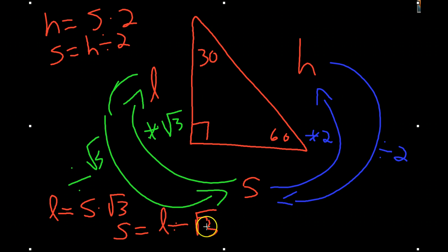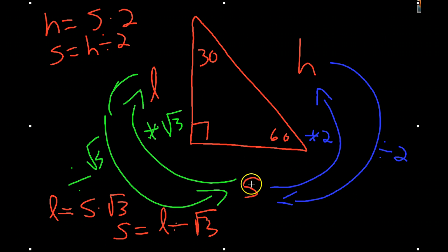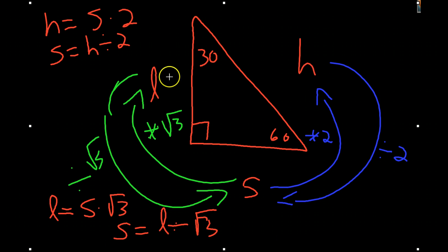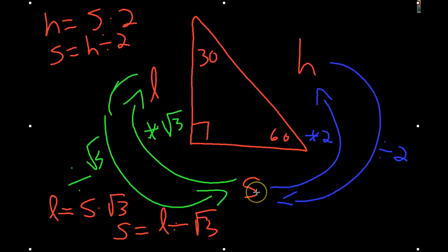So again, if you know the short leg and you want to find the hypotenuse, you multiply by 2. If you know the short leg and you want to find the long leg, you multiply by the square root of 3. If you know the hypotenuse and you want to get to the long leg, you first divide it by 2 to get to the short leg, then you take the length of the short leg and multiply it by the square root of 3 to get the long leg.